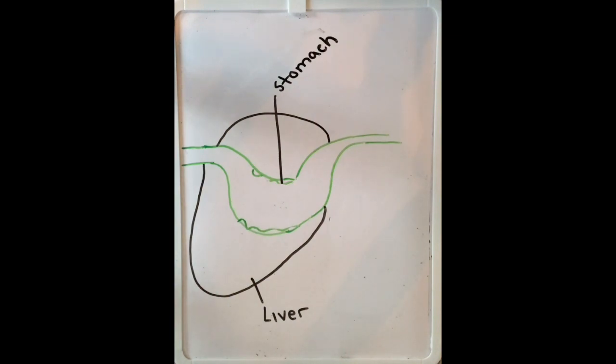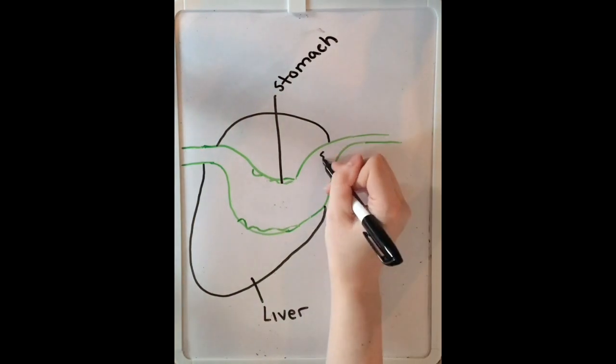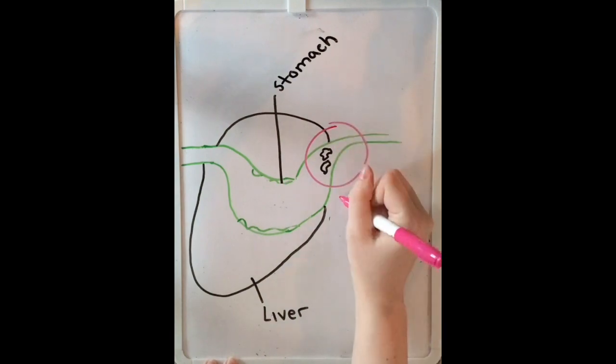Now as we move on to mechanical digestion, the wall of the stomach is muscular, particularly where it connects to the intestine, called the pyloric region.